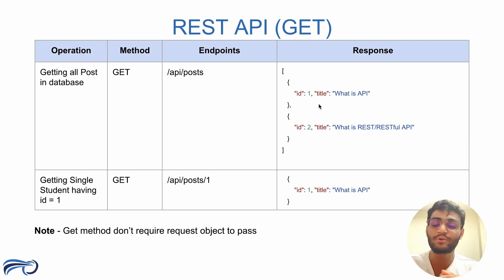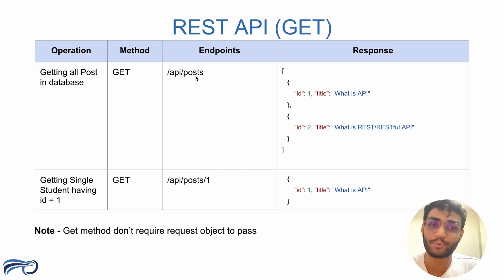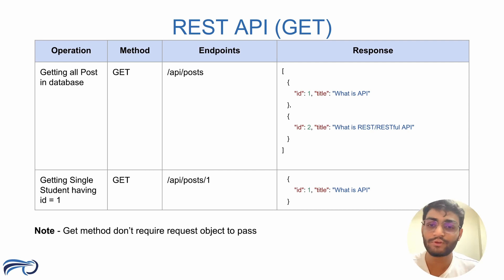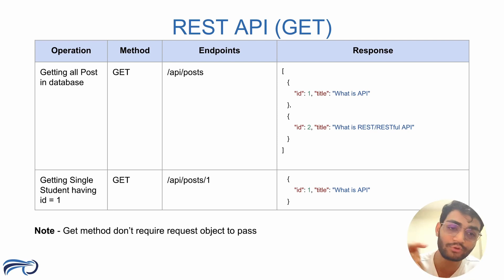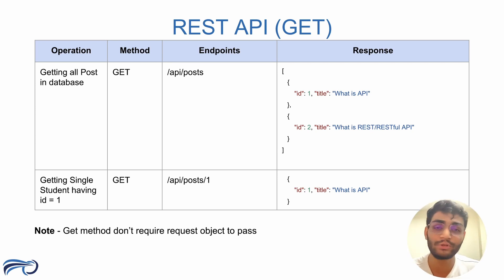Now let's understand the GET method in detail. If you want to get all the data from the database, we use the GET method with the endpoint '/api/posts' — it will return a list of all objects. If you only want one record, you use the endpoint '/api/posts/1', where '1' indicates the ID. It will go into the database, find the record with ID 1, and retrieve that data. One important thing to note is that the GET method does not require any request body — it only requires the endpoint and it will return the response.